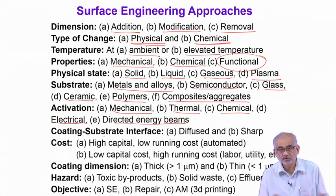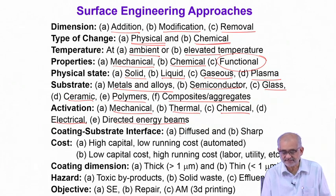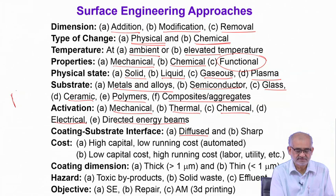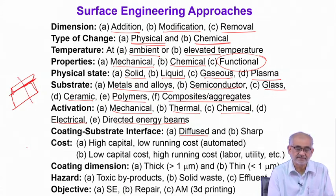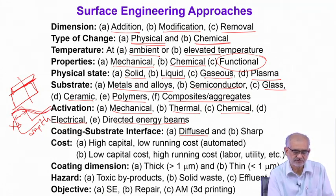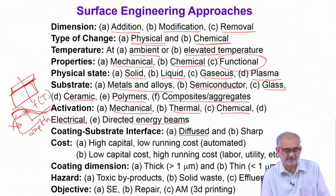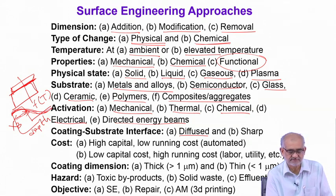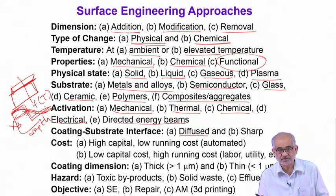Almost all surface engineering processes can be broadly divided into two major categories in terms of the coating-substrate interface. If we plot the composition of a solute element as a function of depth, we have two possibilities: a sharp interface, where the coating region has an entirely different composition than the substrate, or a diffused interface, where the solute atom has diffused to a certain depth from the surface — usually a function of temperature or some other activation.